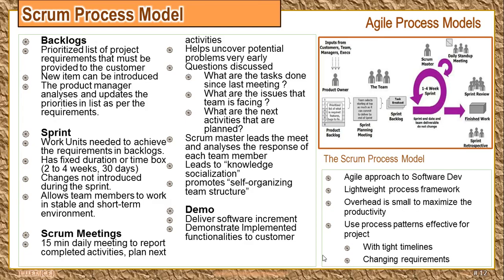The Scrum process model is an agile approach to software development. It is a lightweight process framework because it takes only those features which are requirements of the current increment delivery, leaving behind things that are not important or not to be delivered in this increment. The overhead is hence very small and the productivity drastically increases. The Scrum model is effective when you have a very tight schedule, a strict deadline, and your requirements are continuously changing.